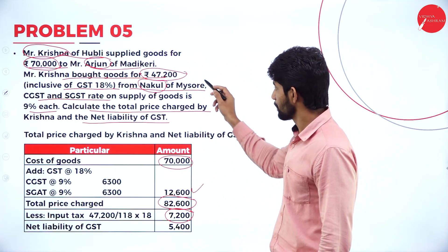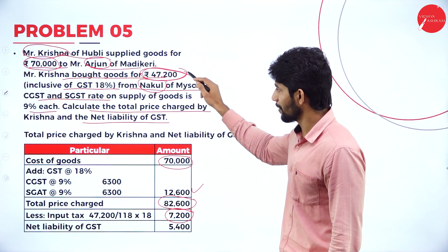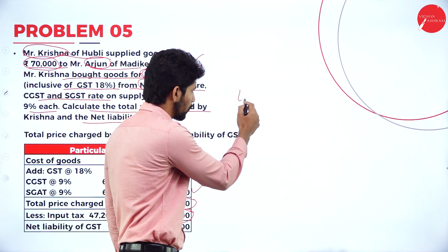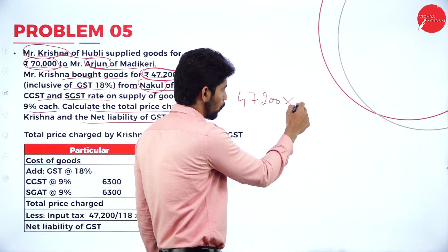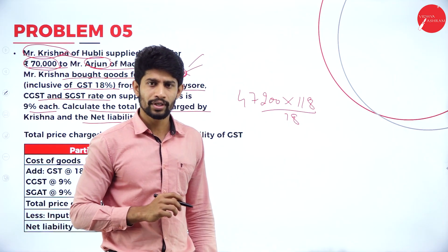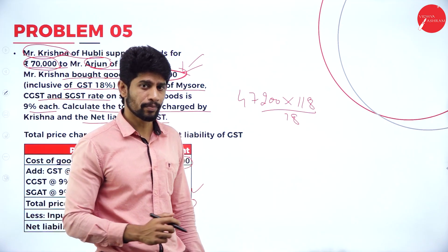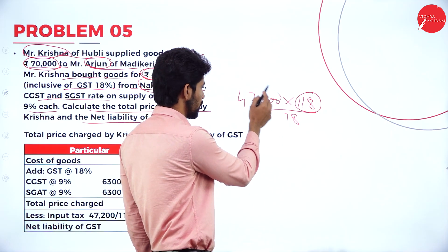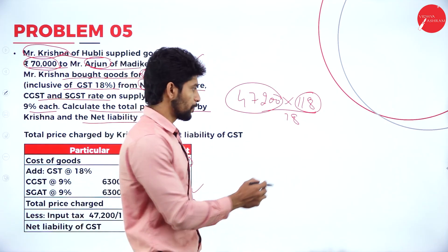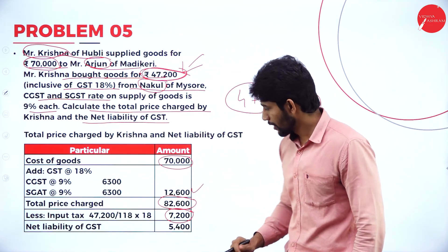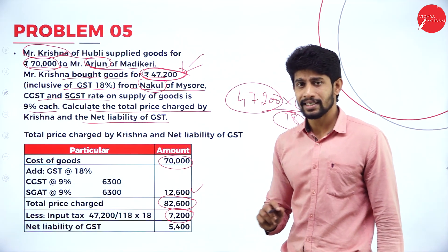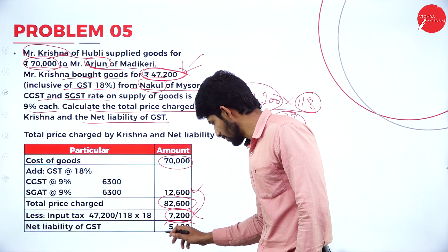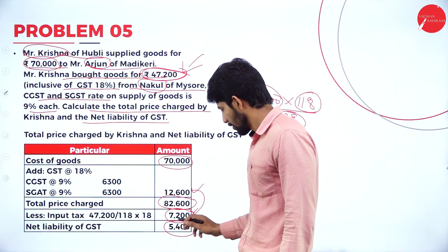The input tax of 7,200 is the GST already paid when purchasing from Mr. Nakul. Since 47,200 is inclusive of 18% GST, we calculate: 47,200 divided by 118 multiplied by 18 equals 7,200. So 100 plus 18 gives 118%, meaning 47,200 is the 118% value and 7,200 is the 18% tax component. Therefore, GST payable is 12,600 minus input tax 7,200, giving a net liability of GST of rupees 5,400.